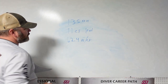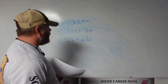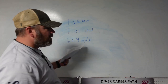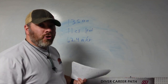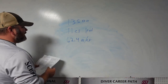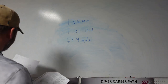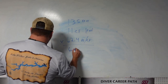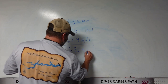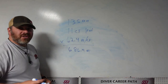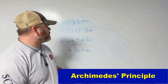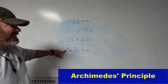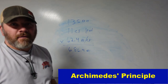Since I have the three determining factors, I can start with the calculation. I'm going to take the amount of water it displaces and multiply it by how much a cubic foot of water weighs. So I take the 11 cubic feet and multiply that by 62.4 pounds per cubic foot, and that gives me an answer of 686.4 pounds. That is the buoyant force this object has in the water — so at the surface that object weighs 1,350 pounds, but underwater it weighs 686.4 pounds.